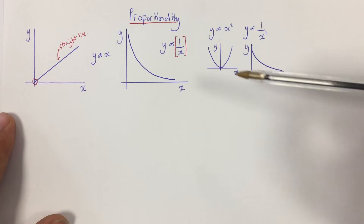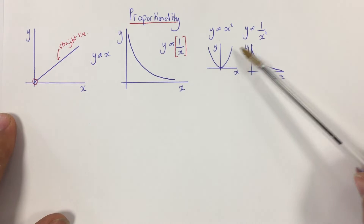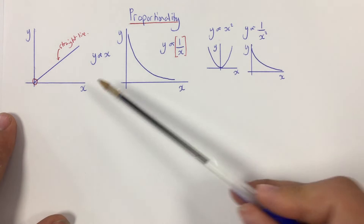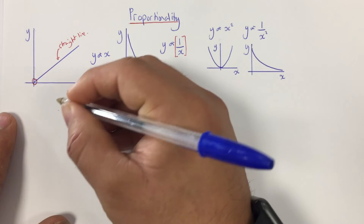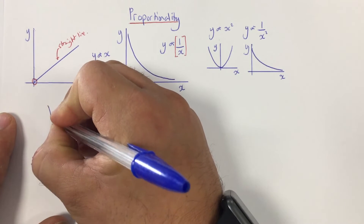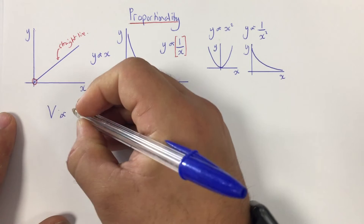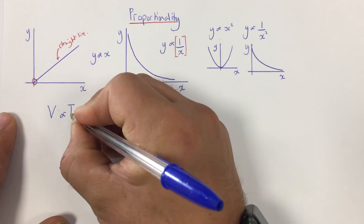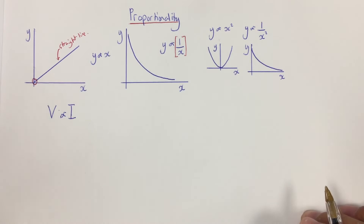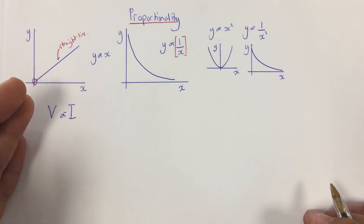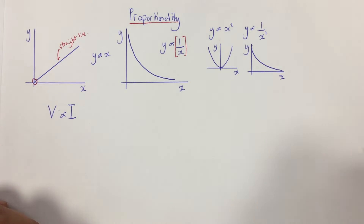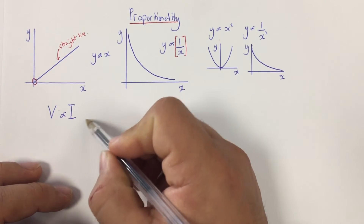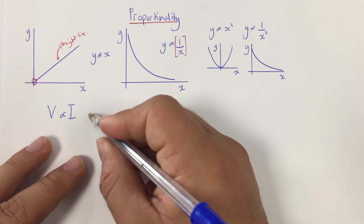The next step with proportionality is not just recognising these four relationships, but being able to spot them within an equation. For example, Ohm's original law states that potential difference, or voltage, is directly proportional to current — when temperature and other physical conditions, such as the length or cross-sectional area of the wire, are constant. This proportionality applies only when that subset of factors is held constant.